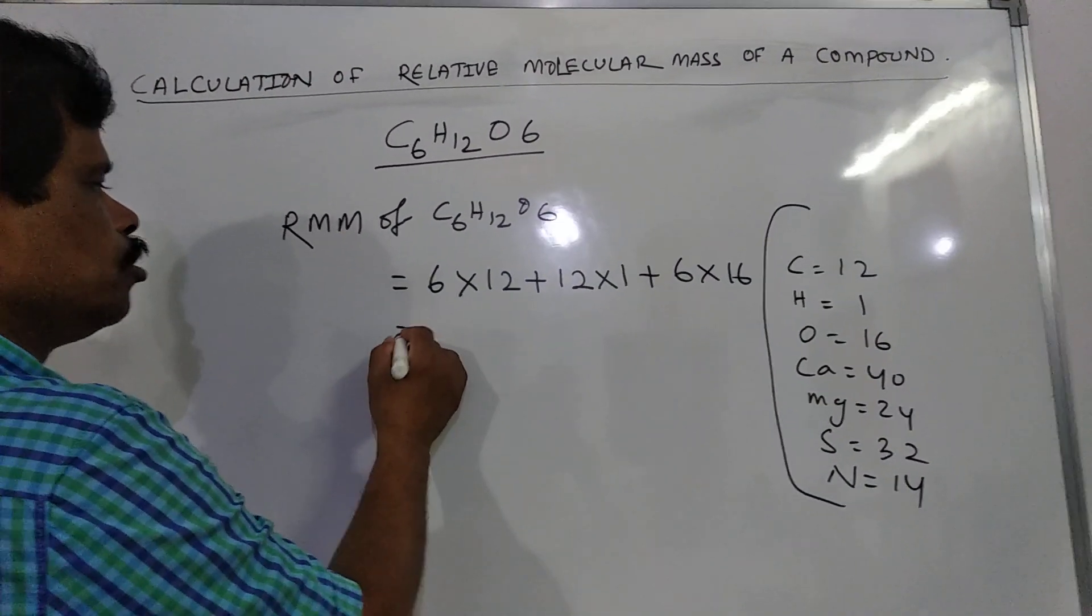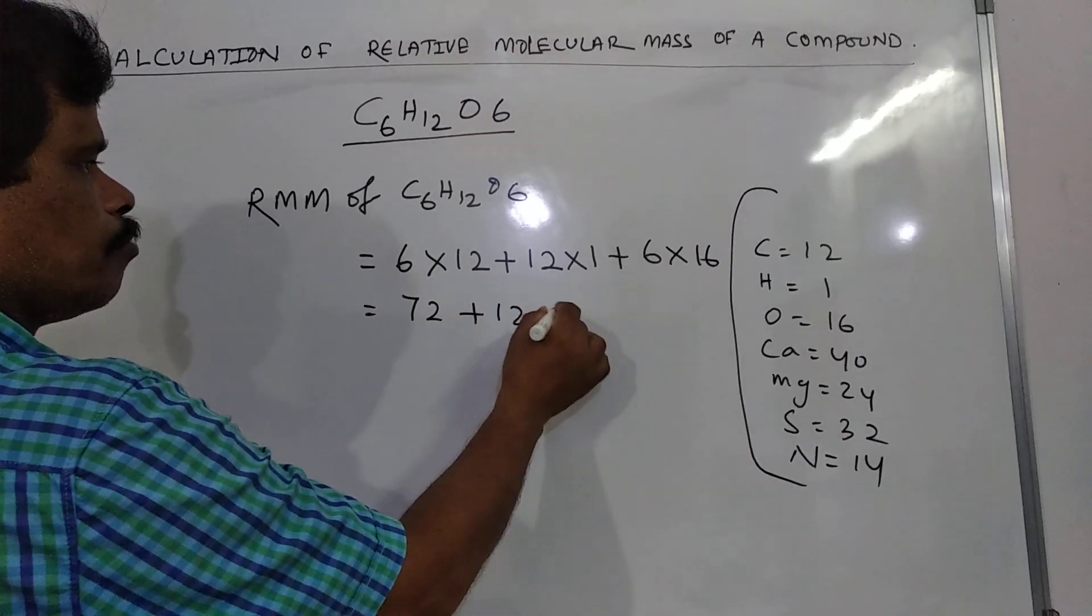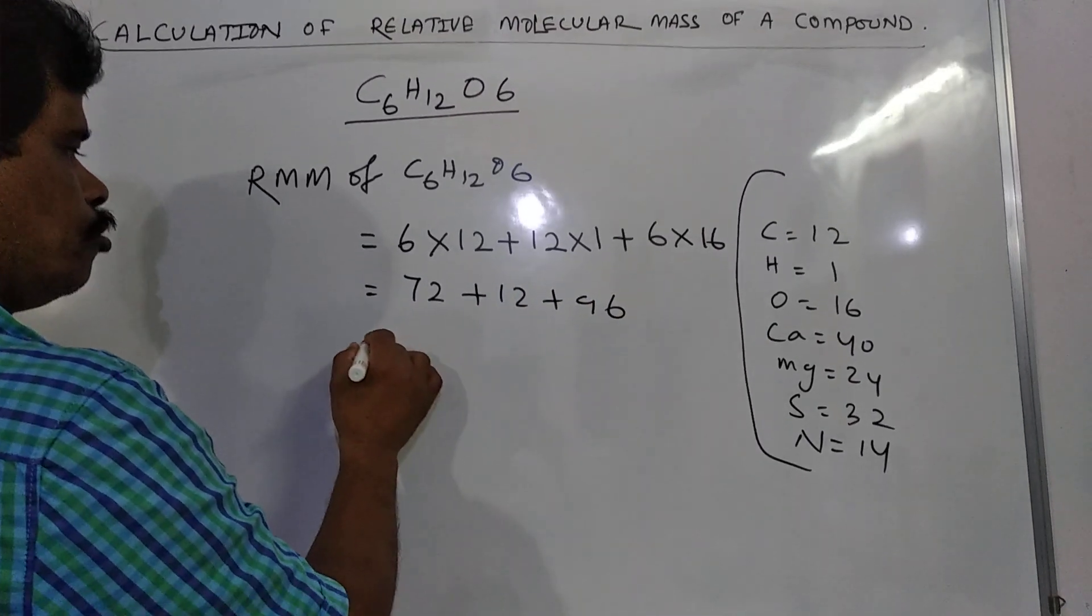So which is equal to 72 plus 12 plus 96, which is equal to